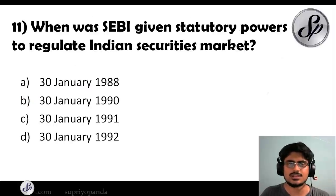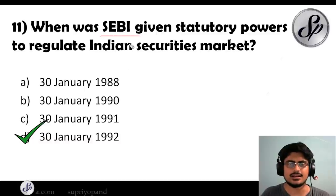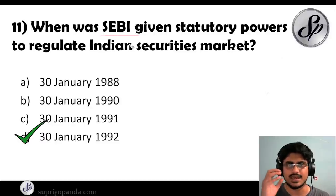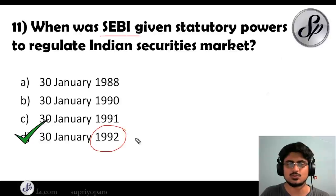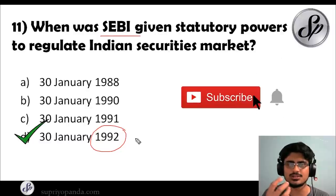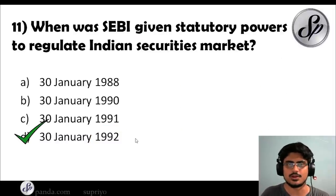Question eleven: when was SEBI given statutory powers to regulate the Indian securities market? The answer is 30th January 1992. Remember that SEBI was actually established in 1988, but the SEBI Act — giving it statutory powers — was passed in 1992. Statutory powers means powers with reference to an act of parliament, and that is when SEBI actually started to regulate the securities market.